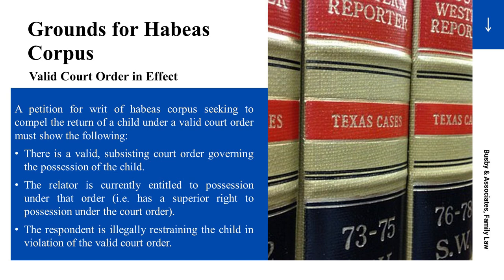How do you file a writ of habeas corpus when you have a valid court order in effect? A petition for writ of habeas corpus seeking to compel the return of a child under a valid court order must show the following: there is a valid, subsisting court order governing the possession of the child; the relator is currently entitled to possession under that order; and the respondent is illegally restraining the child in violation of a valid court order.